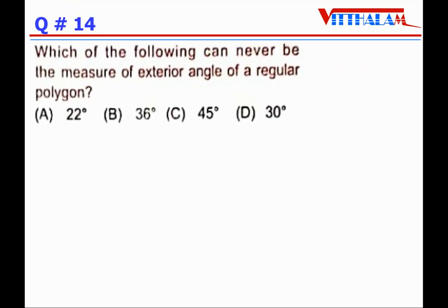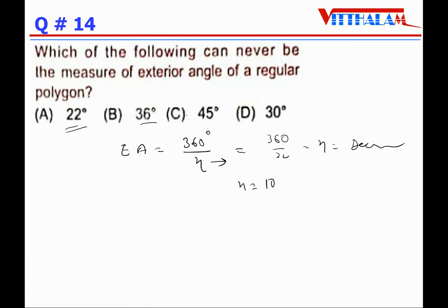Which of the following can never be the measure of an exterior angle of a regular polygon? The exterior angle = 360°/n. If the exterior angle is 22°, then n = 360/22, which is not a whole number. For 36°, n=10; for 45°, n=8; for 30°, n=12 — all whole numbers. So 22° cannot be the exterior angle of any regular polygon.